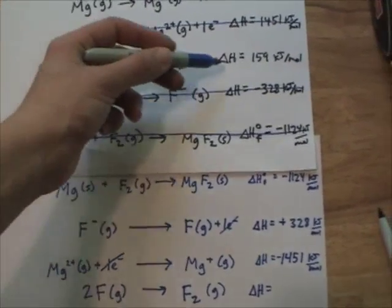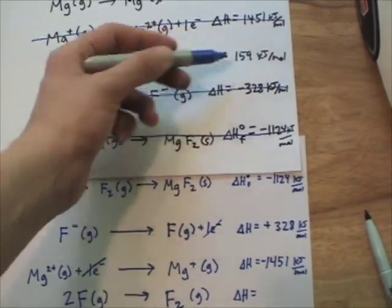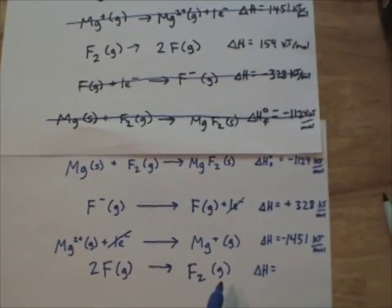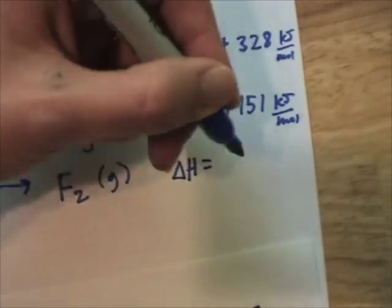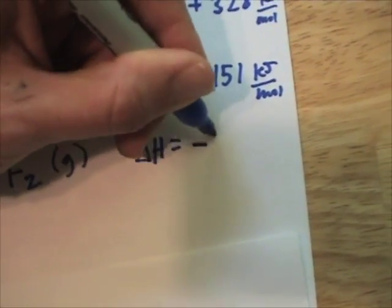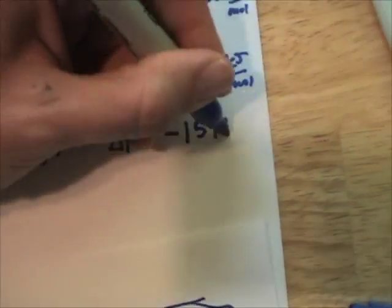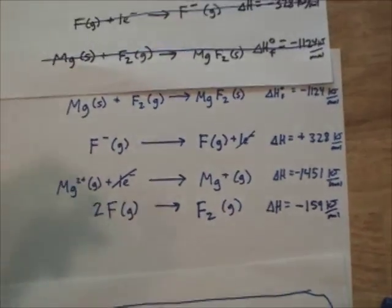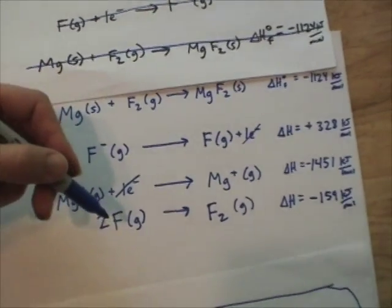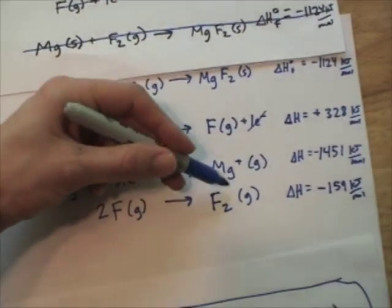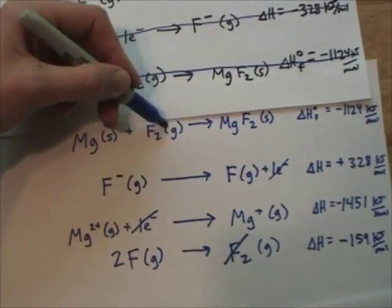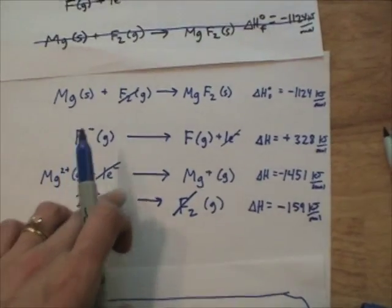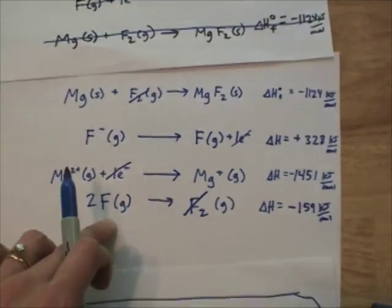So we've flipped this equation. Delta H was 159 kilojoules per mole. I've written it down flipped. So our delta H will be a negative 159 kilojoules per mole. So this allows us to cancel out the F2 gas. F2 gas. We're almost there, but wait a minute. We've got two F gases there and two right here.